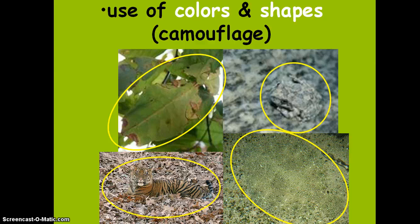Use of colors and shapes — camouflage. In some pictures it's easy to find the animal, but in others it's very hard. These animals are blending into their surroundings to avoid predators, and camouflage can also help them find prey.